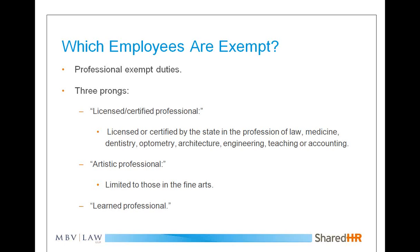The most important exemption for the A&E industry is the professional exemption, which has three prongs. The first is the licensed or certified professional: if someone is licensed in architecture or engineering and is exercising the necessary judgment and discretion — which licensed professionals almost always are — then they are exempt. This is easy and accounts for a large number of employees. Interior designers, however, may not be able to take advantage of this prong because the state does not provide for licensure in that field.